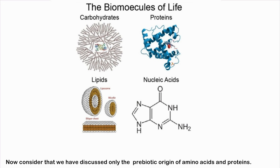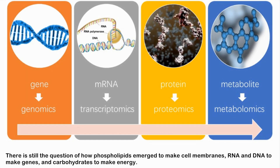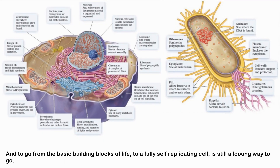Now consider that we have discussed only the prebiotic origin of amino acids and proteins. There is still the question of how phospholipids emerge to make cell membranes, RNA and DNA to make genes, and carbohydrates to make energy. To go from the basic building blocks of life to a fully self-replicating cell is still a long way to go.